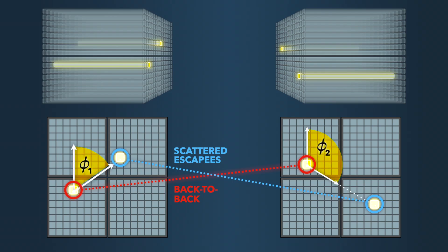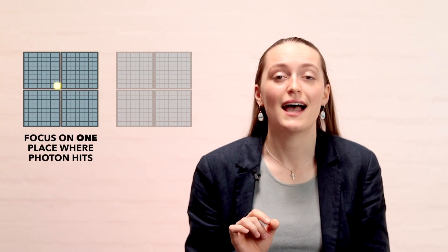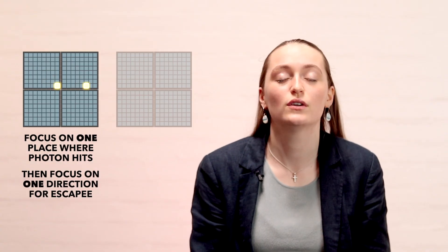We want to compare the directions of the escapee photons, as this will tell us about the entanglement of the back-to-back photons. If one of the escapee photons travels in a certain direction, we want to look at what the other escapee photon does. To do this, we're going to pick a spot on this detector, where the original photon from the PET source arrives, and set phi1, the direction that the escapee photon goes from here.